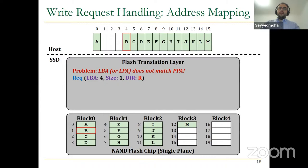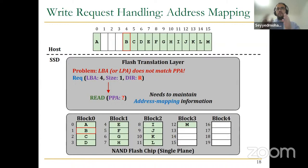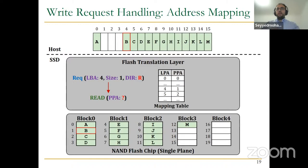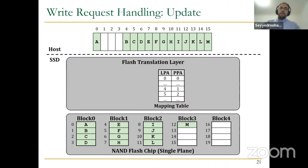Consider that we receive a read request from logical block address 4 with size 1 — we want to read only one page. The SSD needs to query where that data has been stored. To do that, we maintain address mapping information. SSDs have a mapping table that stores the mapping from logical page address to physical page address. Querying that table, we find that logical page address 4 is mapped to physical page address 1. The FTL then sends the read command to the corresponding NAND flash page and provides the data to the host.